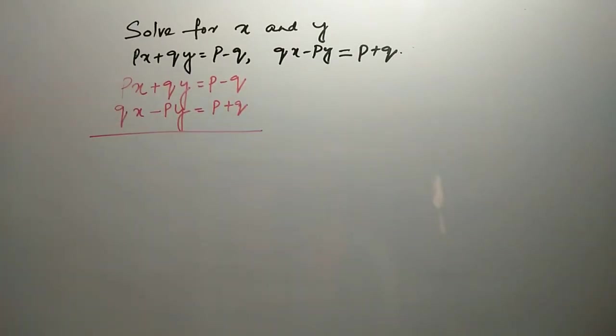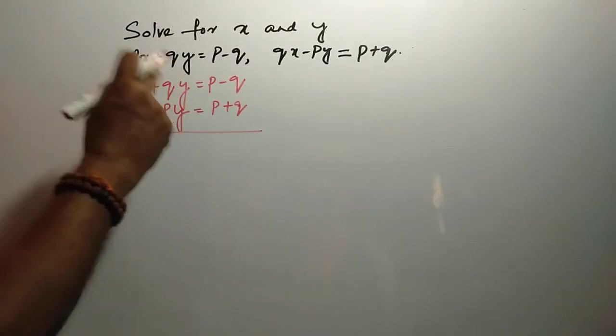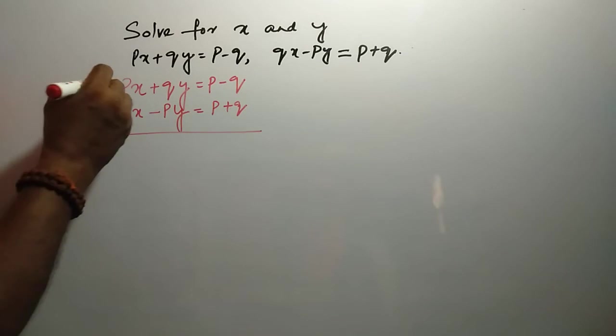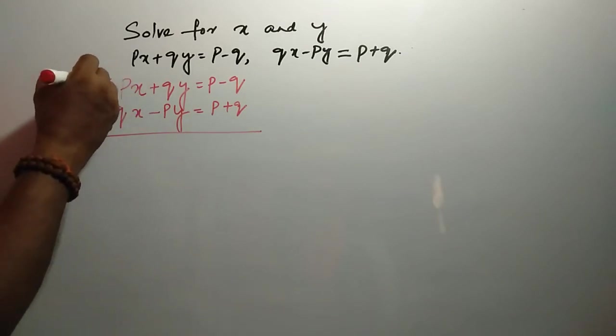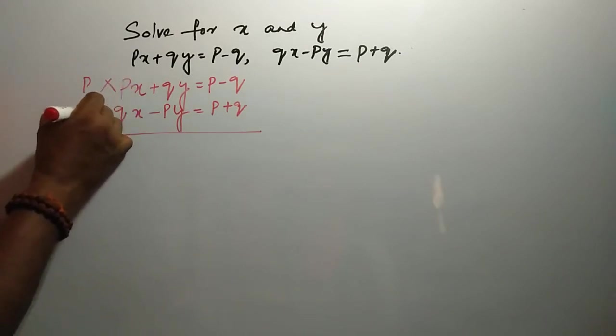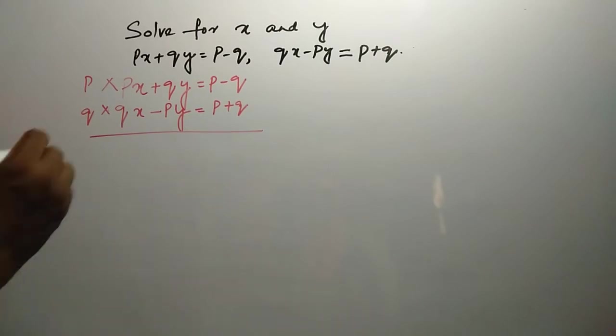From both equations to eliminate this part, we are going to multiply P on top and Q at the bottom.